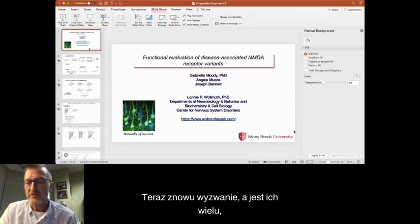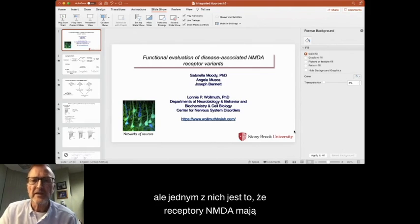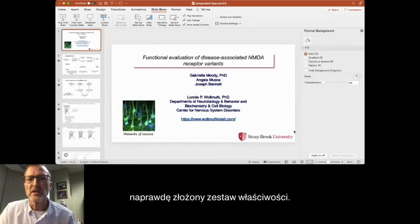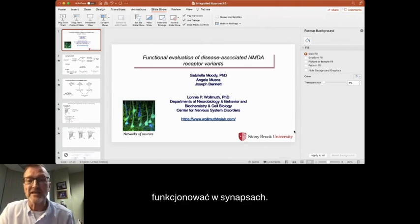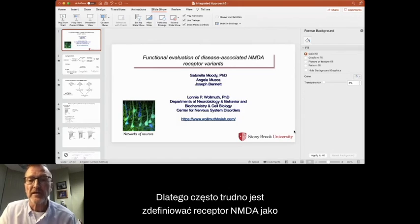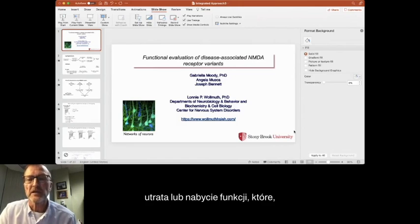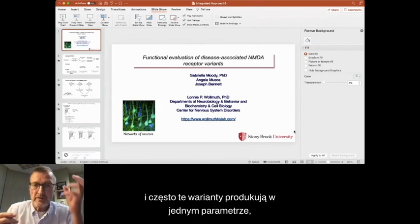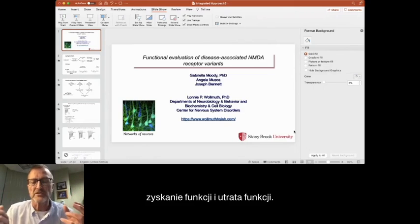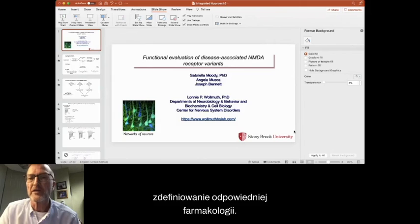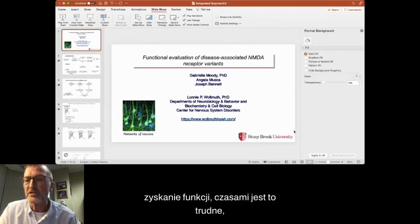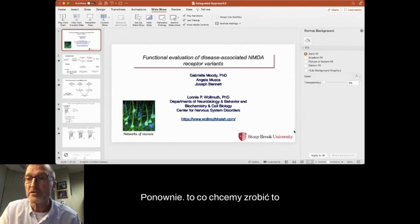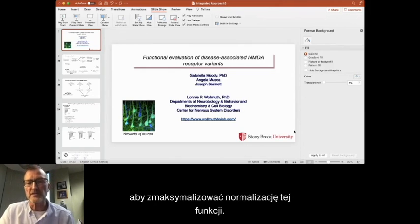Now, the challenge again, and there's many of them, but one of them is that NMDA receptors have really a complex array of properties. So these are the properties that control their function at synapses. And so it's often difficult to define an NMDA receptor as loss or gain of function, and oftentimes these variants will produce in one parameter a gain of function and another, a loss of function. So it's oftentimes difficult to define the appropriate pharmacology. And even if you define a variant as loss of function or gain of function, it's sometimes challenging to know what to normalize. Again, what we want to do is to maximize normalizing this function.